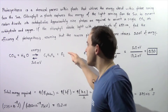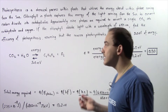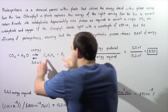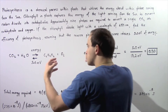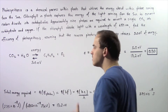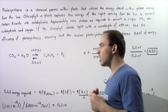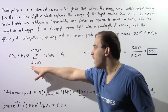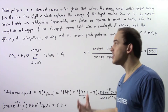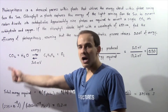On the other hand, if we examine the reverse process, this is an exothermic process. These molecules combine to form back the original molecules — the carbohydrate breaks down to carbon dioxide and water — and at the same time, that reverse process releases five electron volts of energy. So we want to find the efficiency of this overall process.